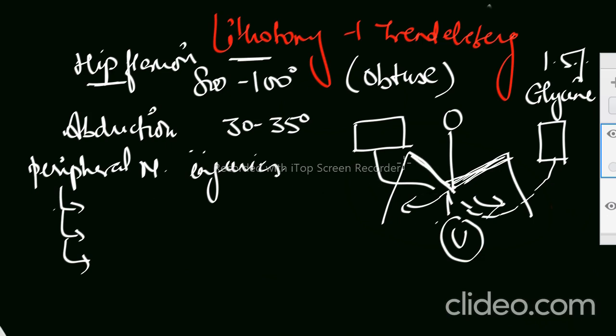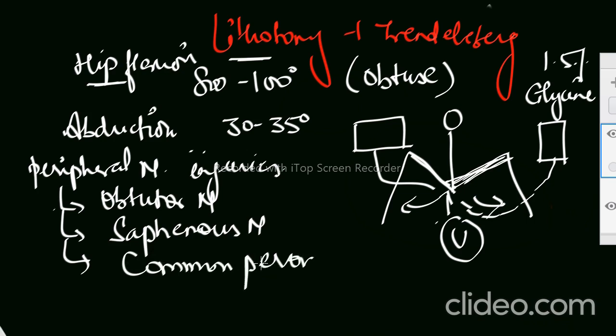Try to recall. First is, yes, we can see the lower first is obturator, obturator nerve. Next is saphenous nerve, and the last is common peroneal. So this is your viva question: what nerve injuries can be caused during lithotomy position?